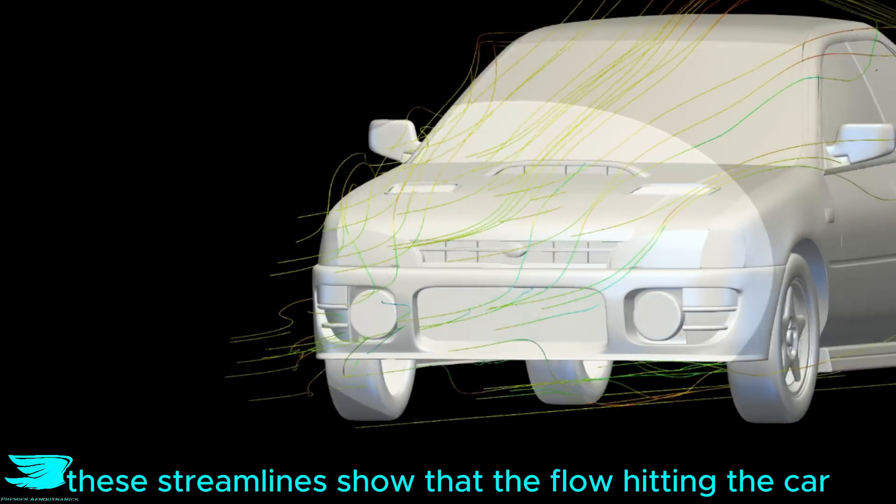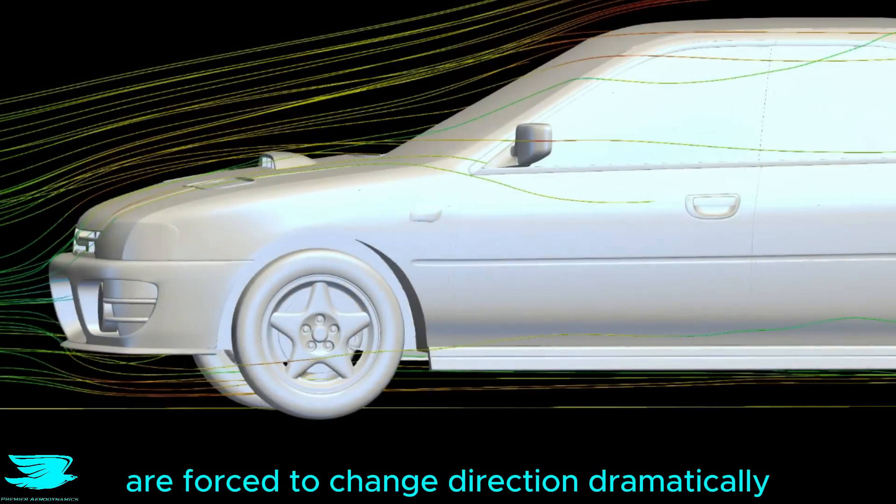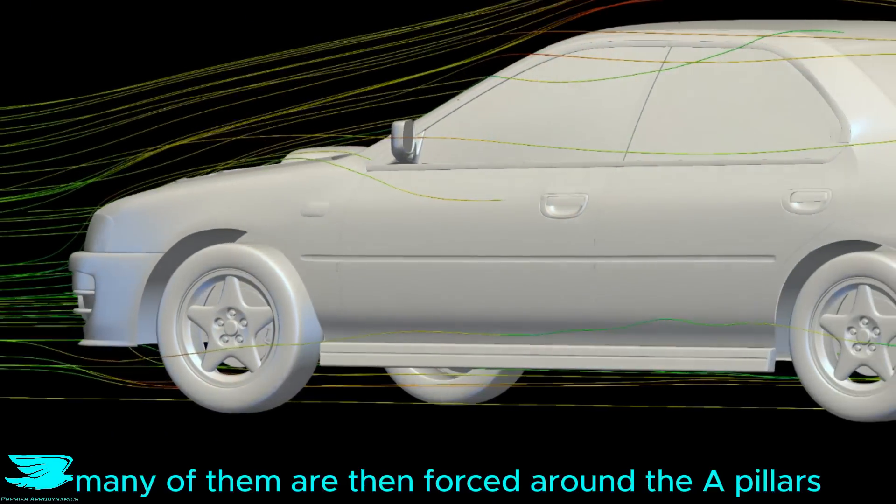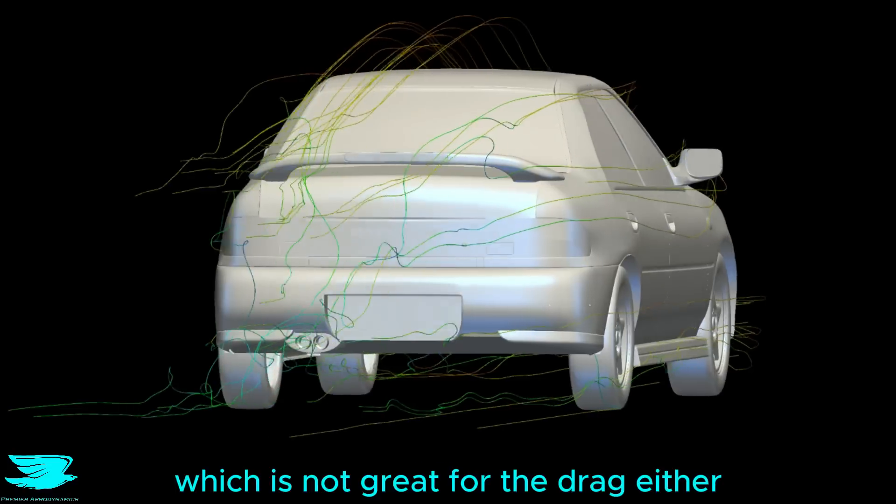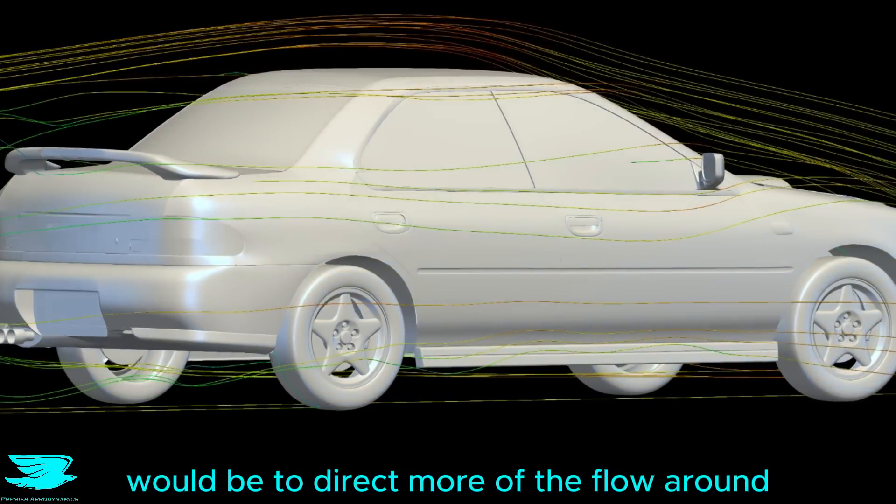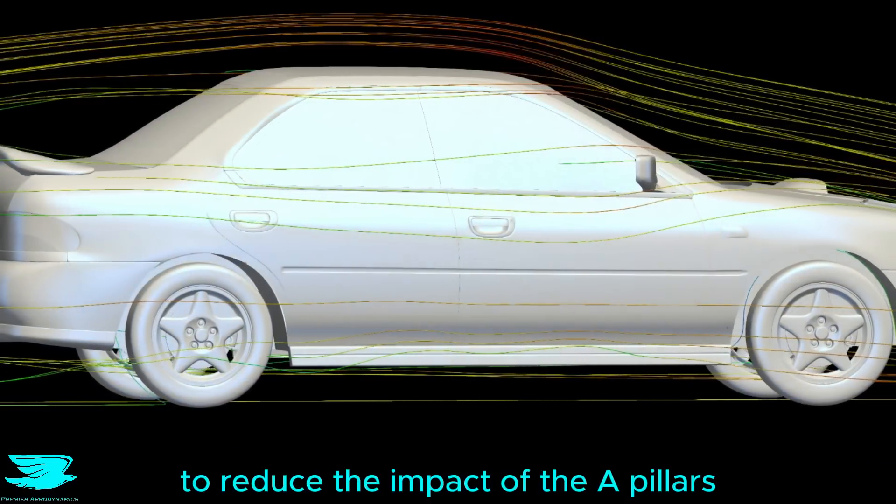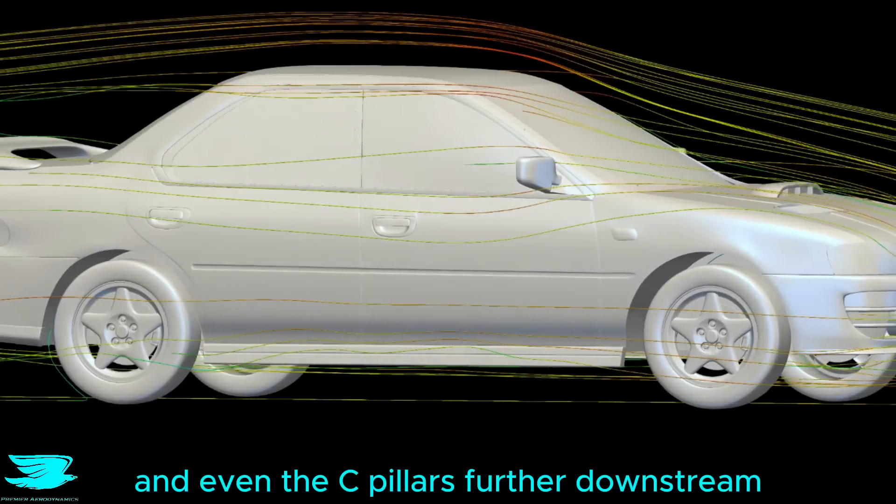These streamlines show that the flow hitting the car are forced to change direction dramatically as they jump over the hood. Many of them are then forced around the A pillars, which is not great for the drag either. An alternative would be to direct more of the flow around the sides of the car to reduce the impact of the A pillars and even the C pillars further downstream.